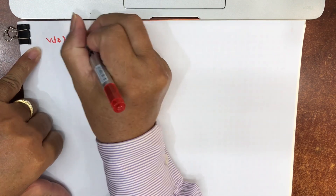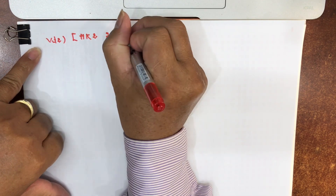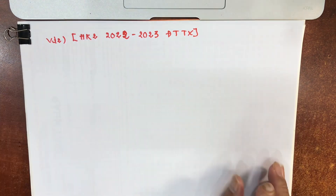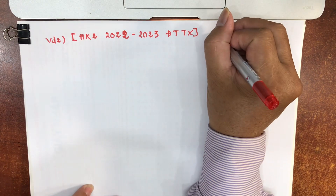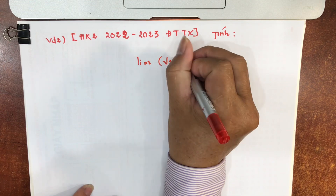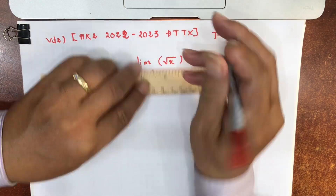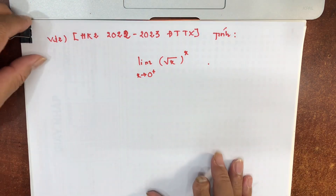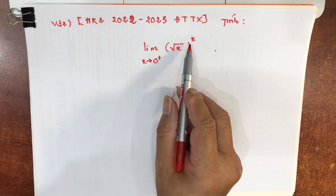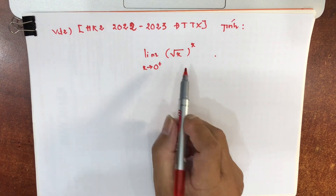Ví dụ 2: cũng trích từ đề thi hệ đào tạo từ xa. Tính giới hạn lim của (√x)^x khi x tiến về 0⁺. Đây là bài khó — nó không tầm thường nữa. Nhưng về độ phức tạp tính toán thì cũng không quá ghê gớm. Mức độ này là hệ đại trà bình thường học ban ngày cũng có thi rồi đó.